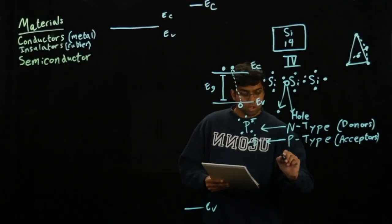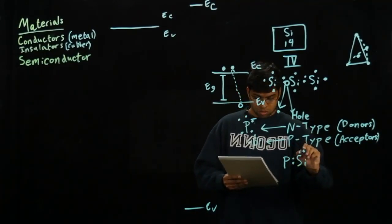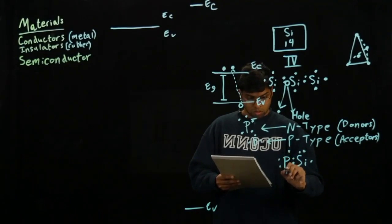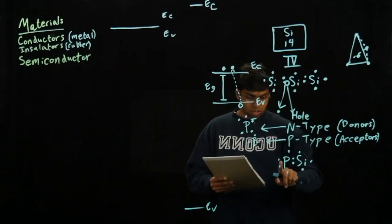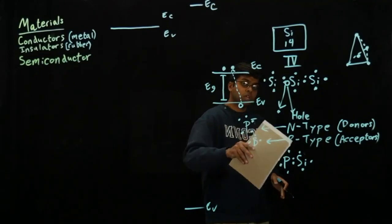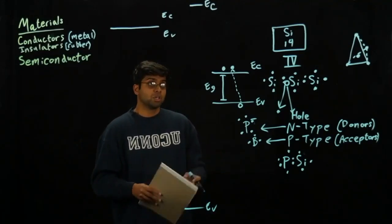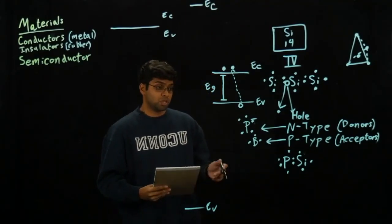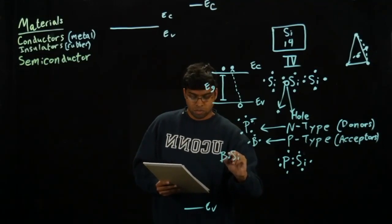When we implant phosphorus into silicon, we can actually see that there are more electrons. That means there's going to be more movement within the conduction band, and that imbalance is going to cause movement within the carriers.